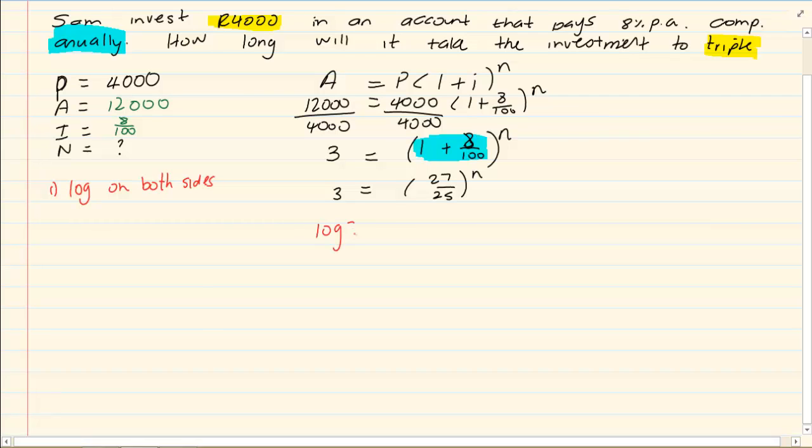So I would have log 3 is equal to log 27 over 25 to the power of N. Then you are going to bring the power in front. So we are going to bring our N in the front, giving us N log 27 over 25 is equal to log 3.